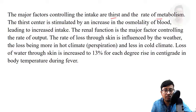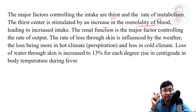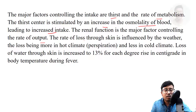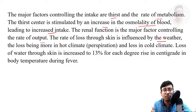The thirst centre is stimulated by an increase in osmolality of blood — when blood becomes thicker, we need more solvent to dilute it, and the thirst centre is stimulated, leading to increased intake. The renal function — the function of the kidneys — is the major controlling factor of the rate of output. The rate of loss through the skin is influenced by weather: when it is hot you perspire more, in cold climate you do not.